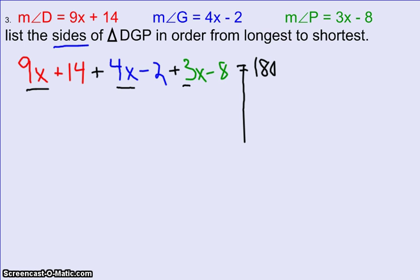9x plus 4x plus 3x. 9 plus 4 is 13. Plus 3 is 16. So I have 16x. Then 14 minus 2 minus 8. Well, 14 minus 2 is 12. 12 minus 8 is going to give me a positive 4. So I have 16x plus 4 equals 180.